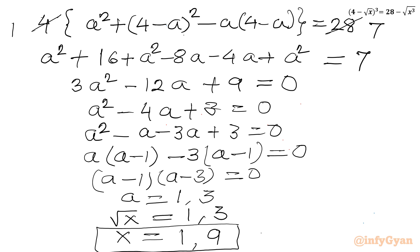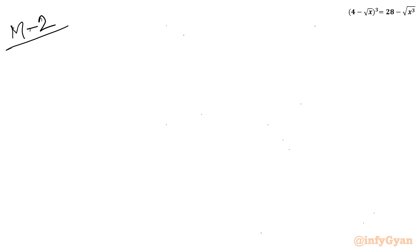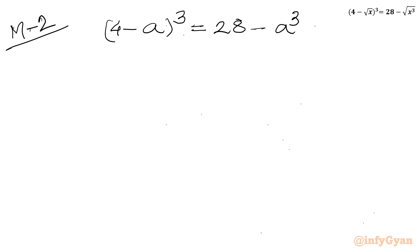That was Method 1. Now let's see Method 2. I'll write our working equation again: (4 - a)³ = 28 - a³, where a = √x.